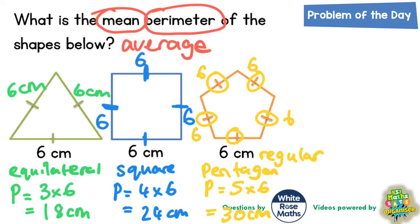Now we know the perimeter of all the shapes, we can work out the mean average perimeter. To find the mean, we add everything together to find the total, and then we share it equally by dividing by how many there are. There are three shapes.